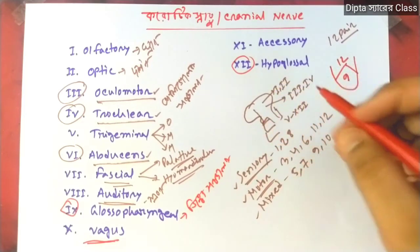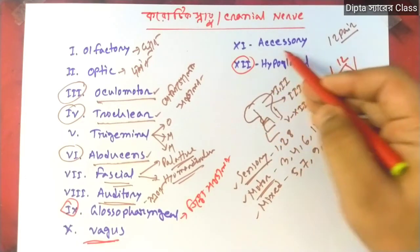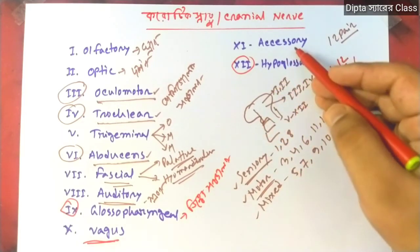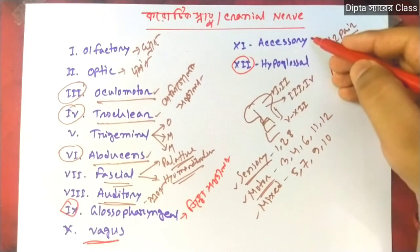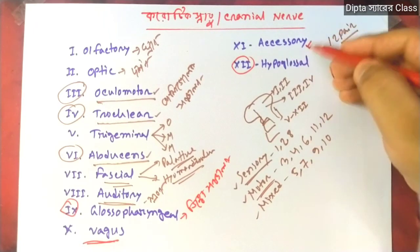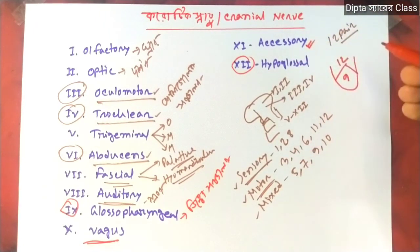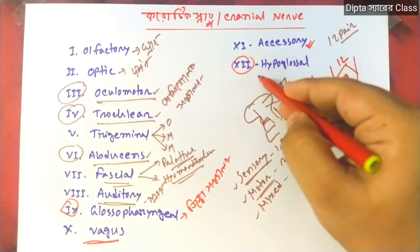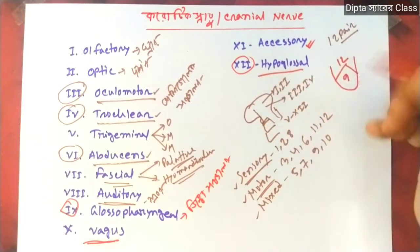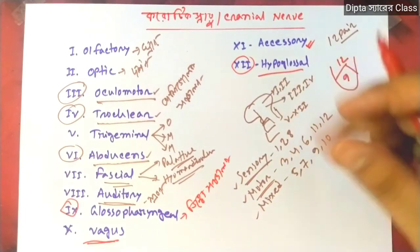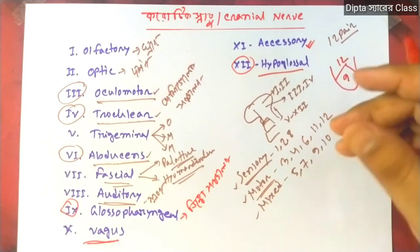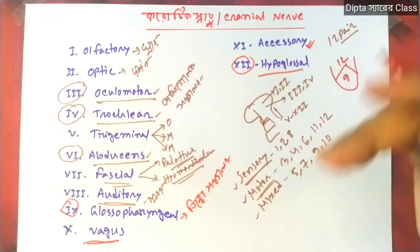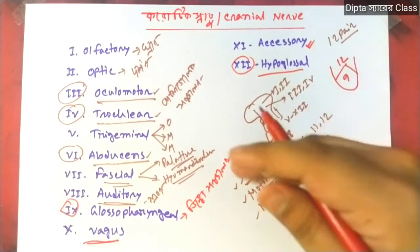The Hypoglossal nerve is already known. So, even if you know the names, we have to keep the serial — we have to keep the serial number system for these cranial nerves.